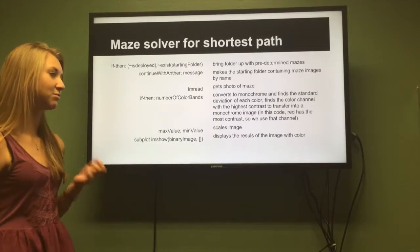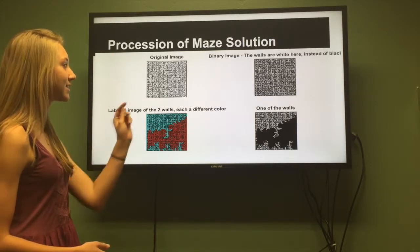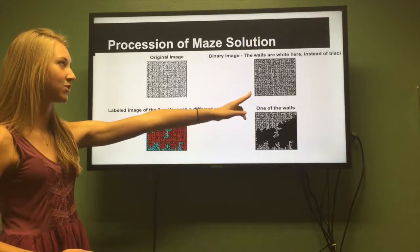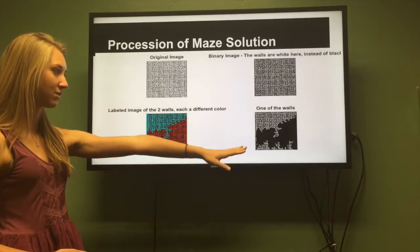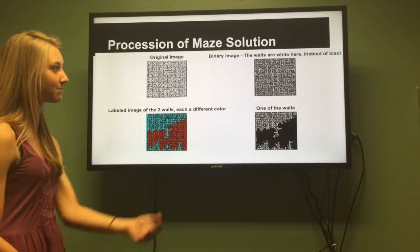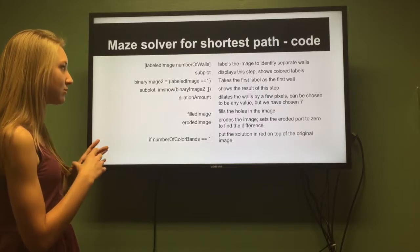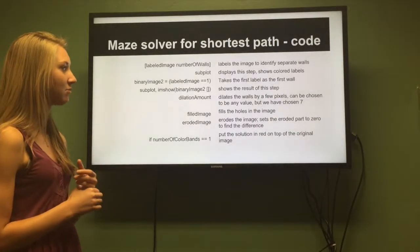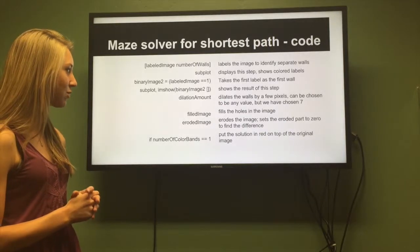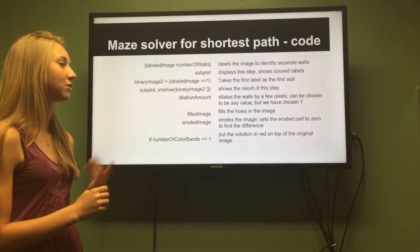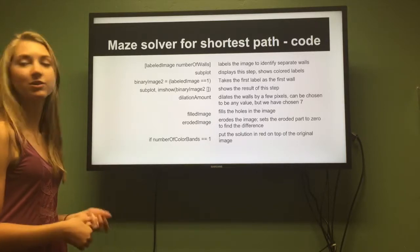Min-max value scaling scales the image, and subplot displays the results with color. It shows a bunch of subplots: the original image, binary images where walls are white instead of black, labeled images showing the highest contrast, and one showing the walls. The labeled image array identifies and labels separate walls. Another subplot shows one of those graphs. Binary image takes the first label as the first wall, and another subplot shows the maze solution with the binary image. Then the cutscene takes over.